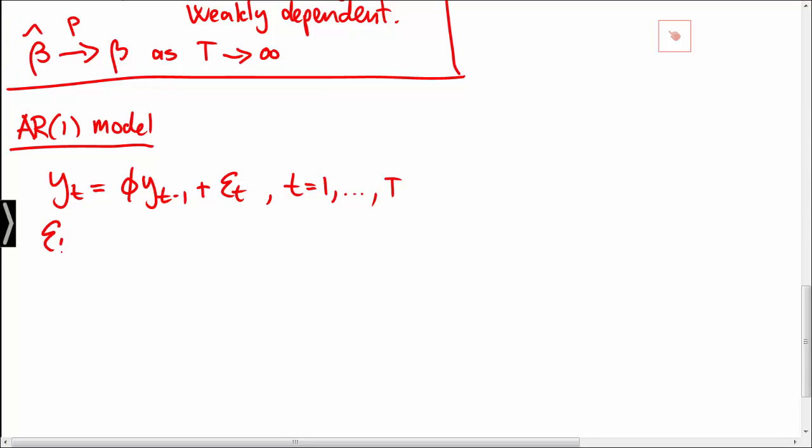We assume that epsilon t is independent over time and identically distributed with a normal distribution with mean 0 and variance sigma squared. Moreover we condition on y0, meaning that y0 can be considered as fixed or known.